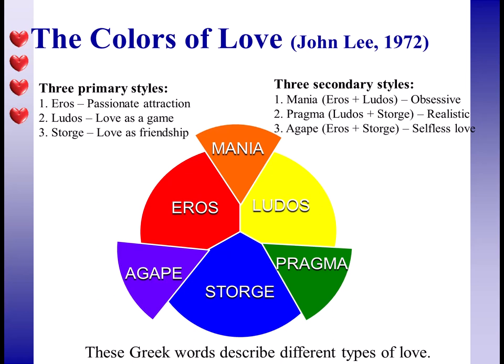The next attempt to explain love is the colors of love by John Lee. We have one word — love — in our language, which is problematic. If you say 'honey I love you' and then say 'I love hot dogs,' it's hard to understand your devotion. But in the Greek language there are many words for love, and Lee built on that with six words: eros, ludus, storge, mania, pragma, and agape.